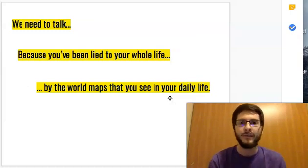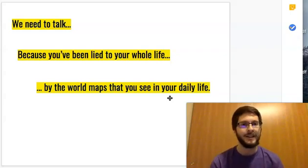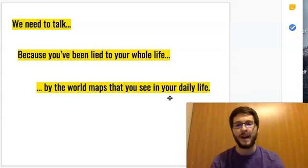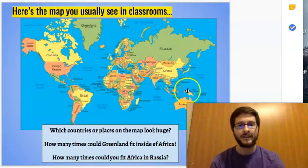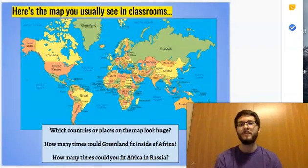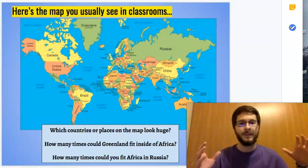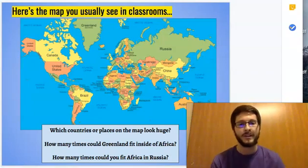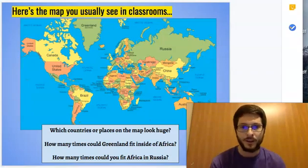But right now, I'm going to keep on keeping on. So we do need to talk because, as this says, you have been lied to your entire life by all the world maps that you typically see in your classrooms and in any other place. Typically, you're used to seeing the super common world map. It looks like this, you know, you might have used Google Maps in the past. It's that image of the world looking just like this. And you might be like, yeah, okay, so what's wrong about that?